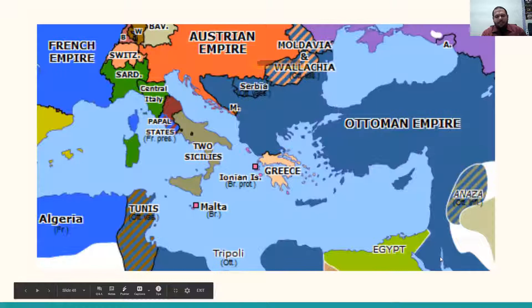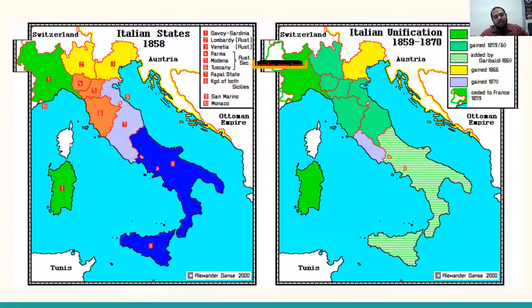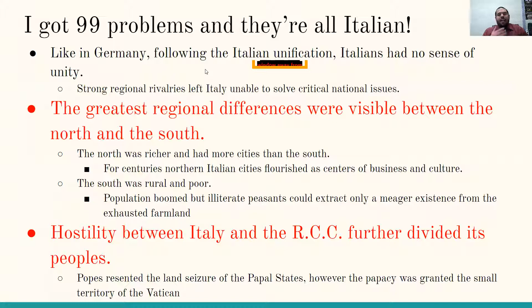Sardinia was able to add Lombardy to itself. Here's the Italian states in 1858. This is the island where Napoleon was born, and this was the island he was banished to the first time. Basically, the forces of control are in the light green, and soon after, they take all of the rest. This is Italian unification, 1870 — it happens.